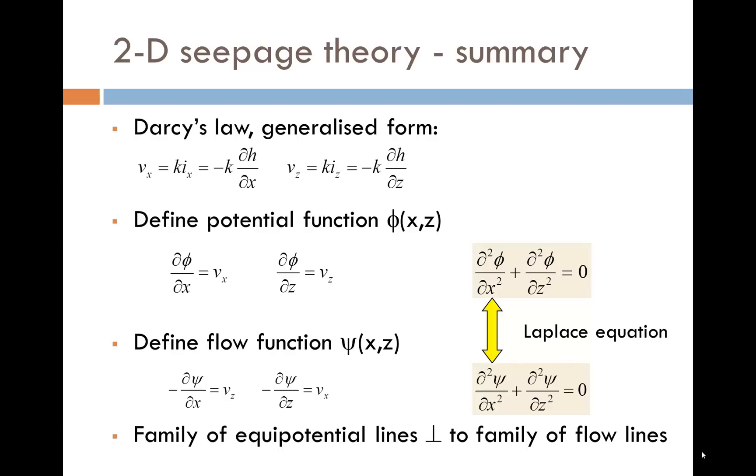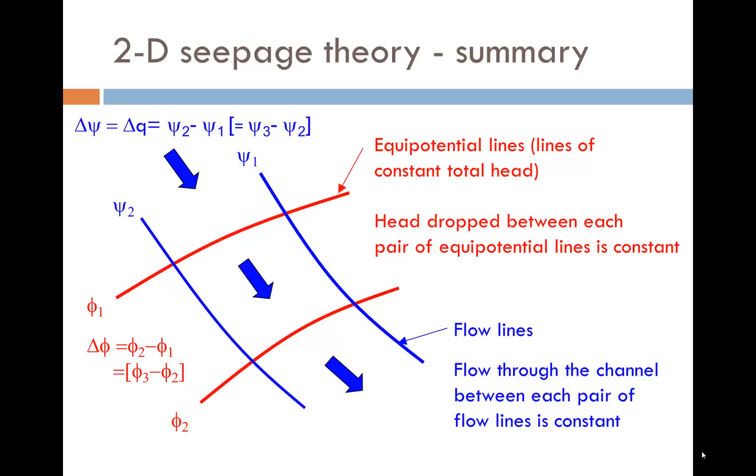Using these equations, it can be shown that they represent a family of equipotential lines and a family of flow lines, which are orthogonal or at right angles to each other. This is illustrated in the diagram. The red lines are equipotential lines, lines of constant total head, and the blue lines are flow lines.